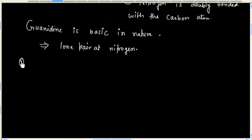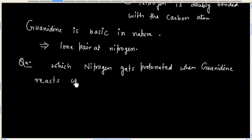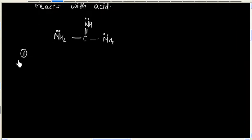A question is asked: which nitrogen gets protonated when guanidine reacts with acid? Either the singly bonded nitrogen gets protonated, or it is the doubly bonded nitrogen that gets protonated. Let us protonate one by one and then examine the stability of the corresponding conjugate acid. Let us first protonate the singly bonded nitrogen.